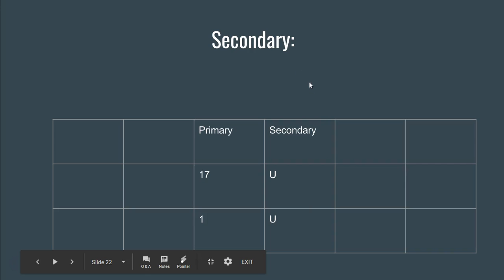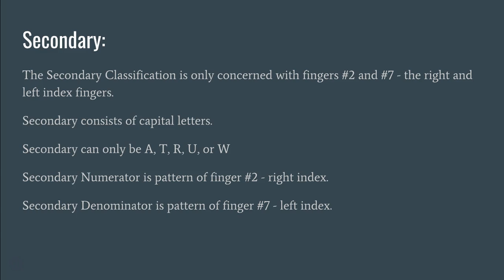You'll notice something different about the secondary versus the primary: the value in the secondary location is a letter as opposed to a number. The secondary classification only deals with two fingers — finger number two and finger number seven, which are the two index fingers. Finger two is the right index finger and finger seven is the left. The secondary consists of only capital letters — one in the numerator from finger two, and one in the denominator from finger seven.